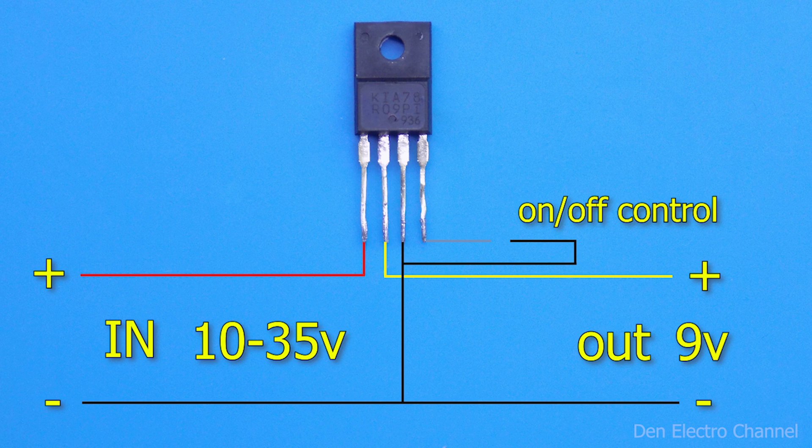If the output of the microcircuit is open, then without load it consumes only about 5 milliamps. This is with an input voltage of 30 volts. If the voltage is lower, then consumption decreases, but only slightly. And if the output is turned off, the current will drop to 2.5 milliamps.